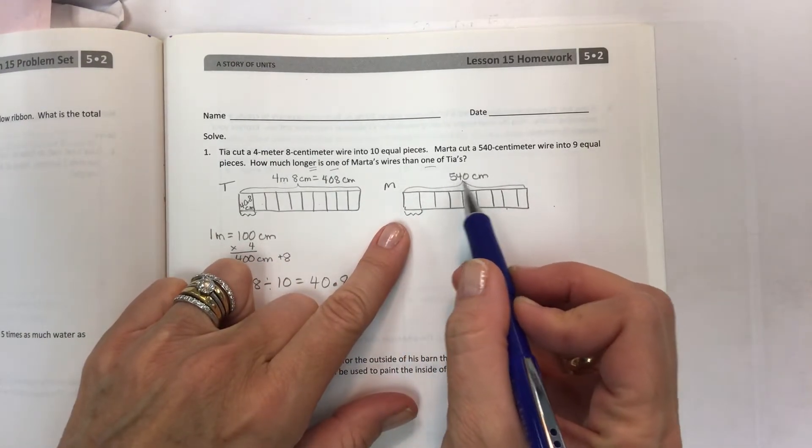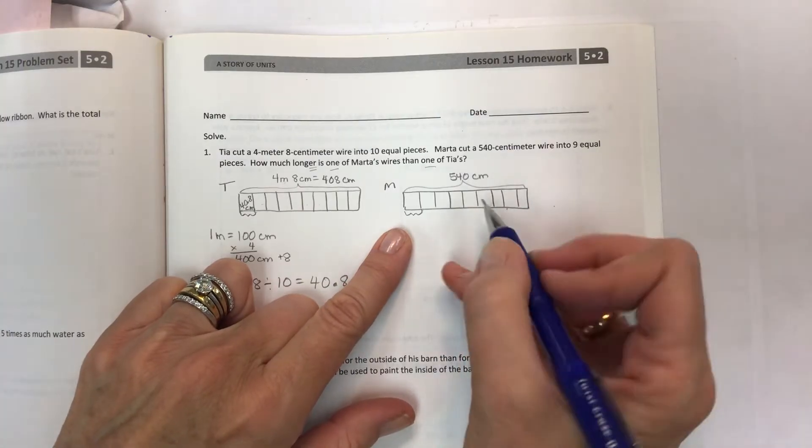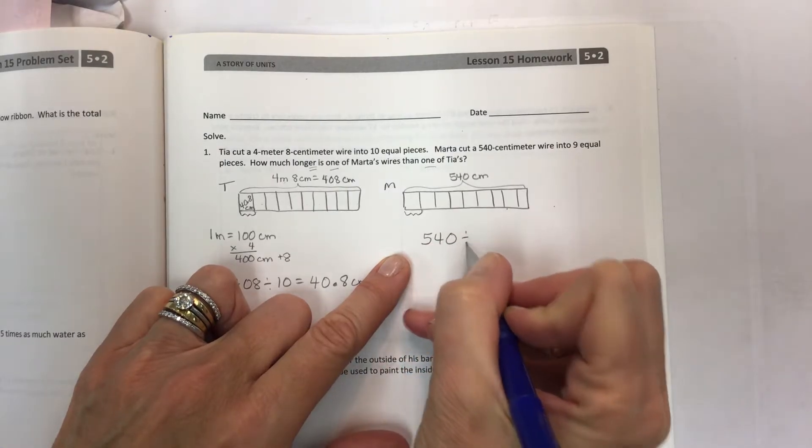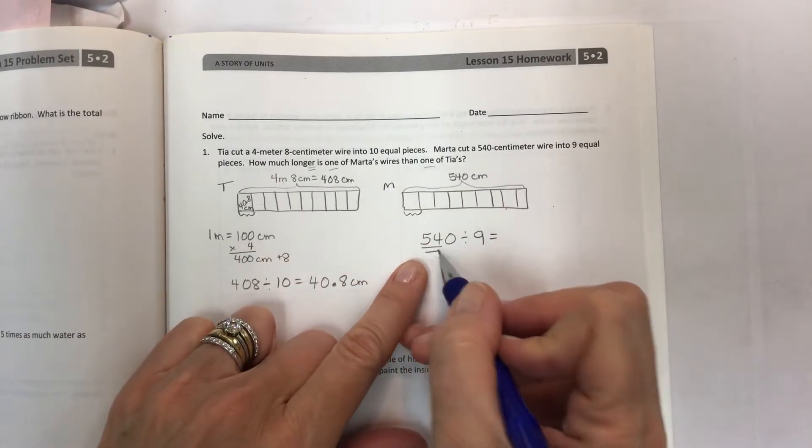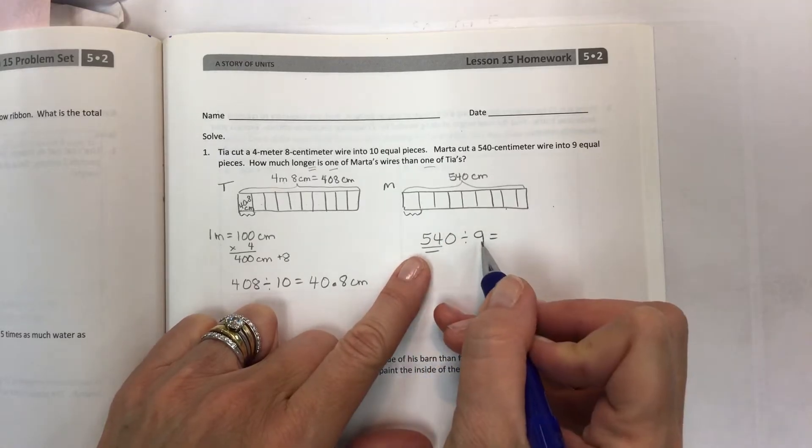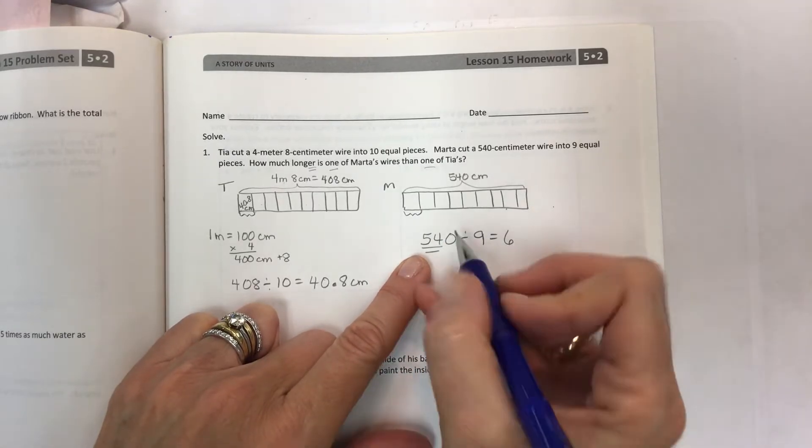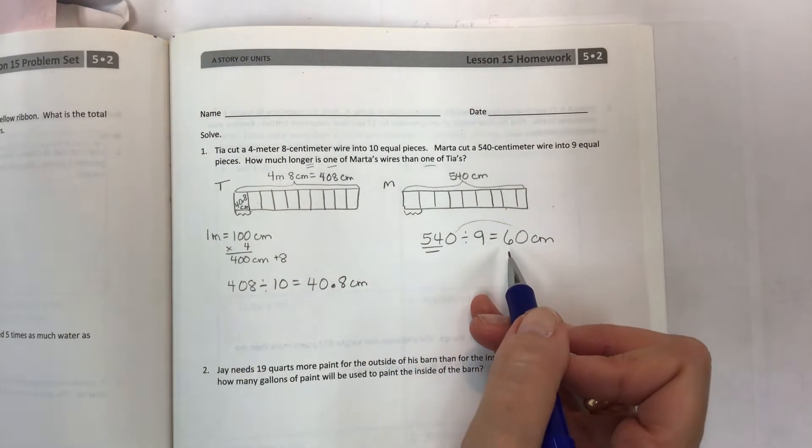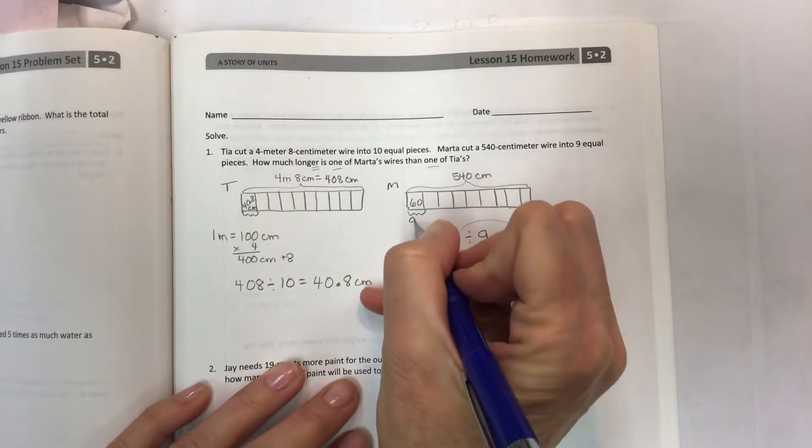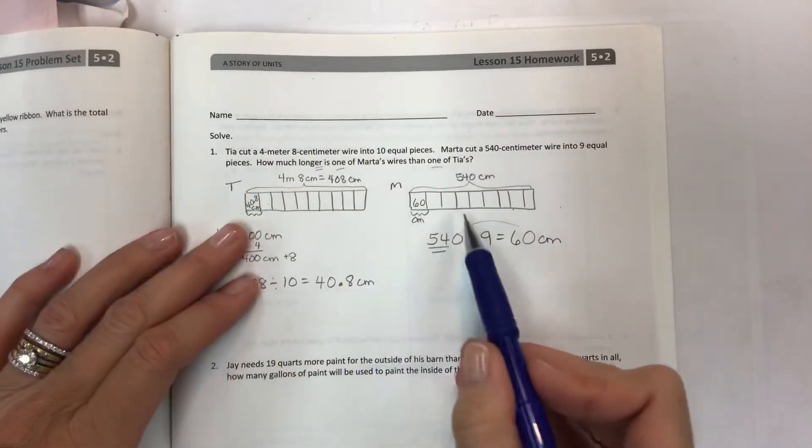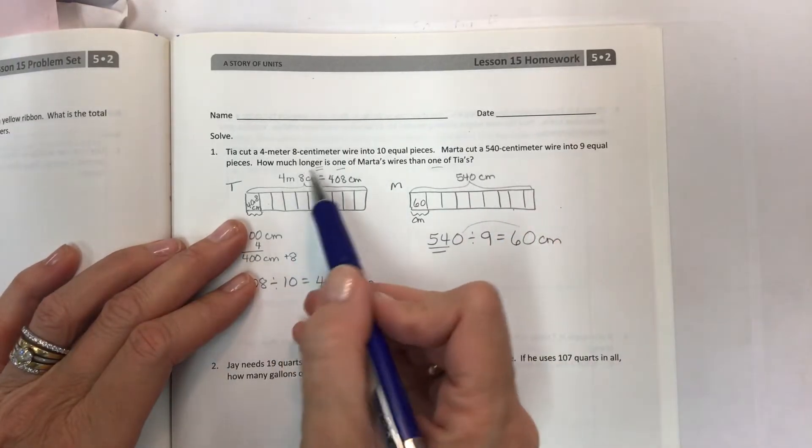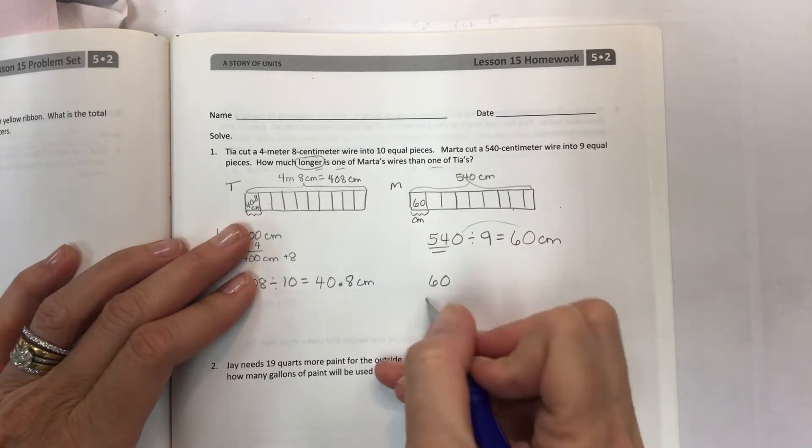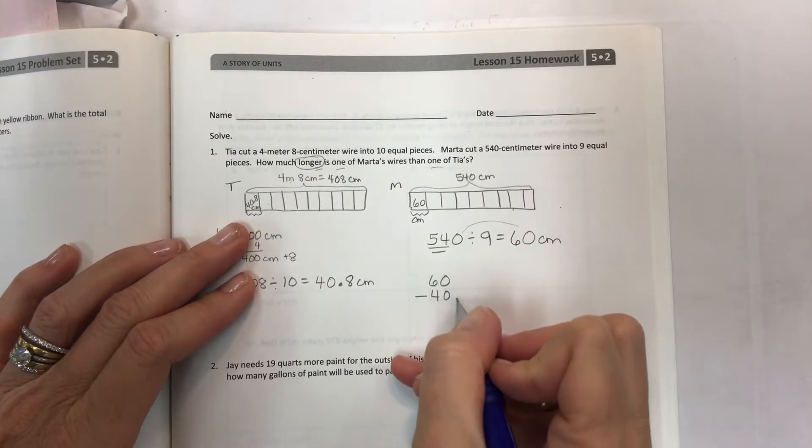Now here we have, let's move over to the Marta and she's got a 540 centimeter wire, but hers is only in nine pieces. So we're going to take that 540 and we're going to divide it by nine. Now this is a, this 54 is a factor of nine by what? Nine times six. Don't forget that zero. So each piece of Marta's is then 60 centimeters.